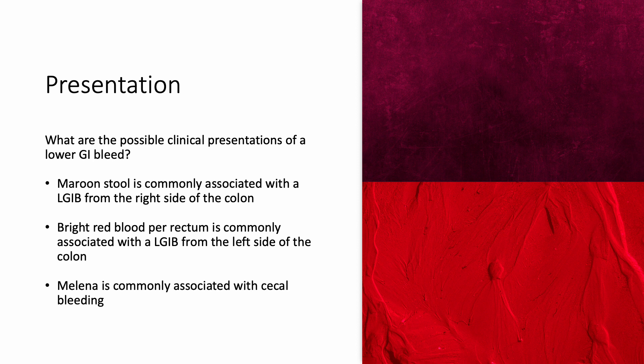What are the possible clinical presentations of a lower GI bleed? Maroon stool is commonly associated with a lower GI bleed from the right side of the colon, compared to bright red blood per rectum, which is commonly associated with a lower GI bleed from the left side of the colon. Melena is commonly associated with a cecal bleed.